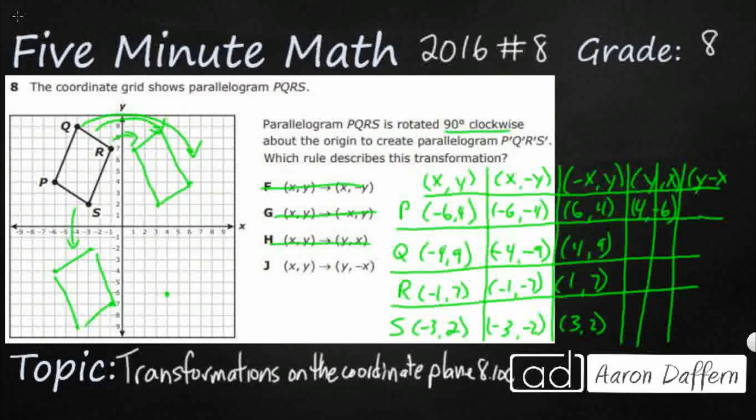So (y, -x). We're going to take our y. That's going to become our new x, 4. And then our x is going to turn negative. So (4, 6). Okay, so that's looking like it's in the correct spot. So that's going to be (9, 4). (9, 4). There we go. This is going to be (7, 1). And that is going to be (2, 3). And that looks good. Yep, we've rotated it. So that is our answer, J. Thank you.